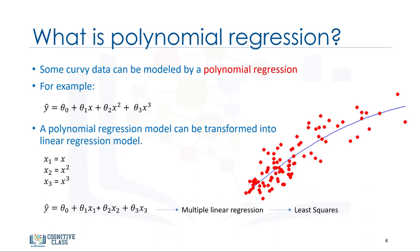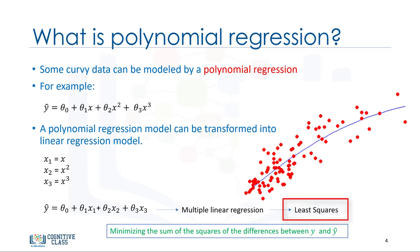So, you can use the same mechanism as linear regression to solve such a problem. Therefore, polynomial regression models can fit using the model of least squares. Least squares is a method for estimating the unknown parameters in a linear regression model by minimizing the sum of the squares of the differences between the observed dependent variable in the given dataset and those predicted by the linear function.